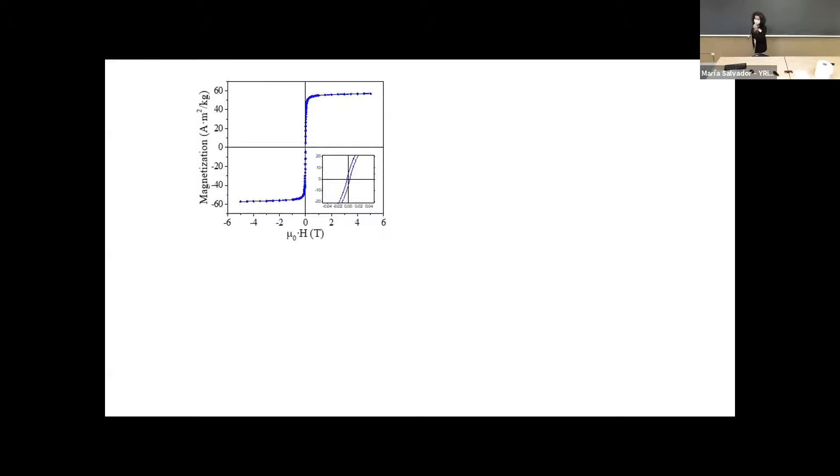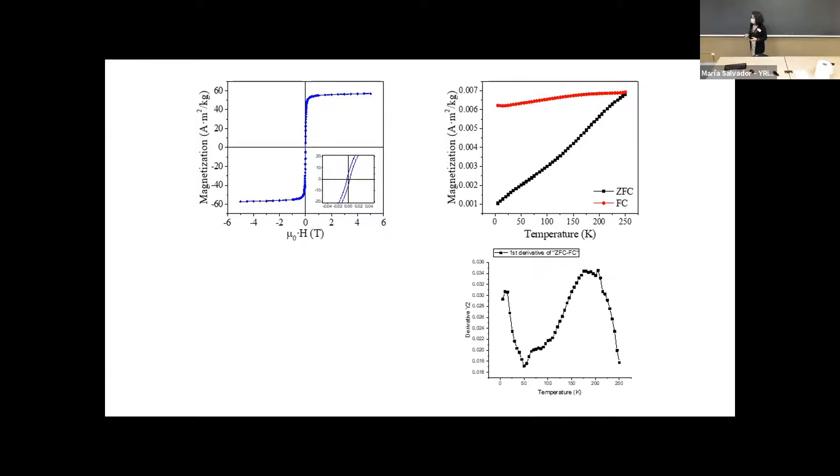So we have done the magnetic characterization of these nanoparticles, and here you have the room temperature magnetization curve in which you can see that almost there is no remanence and coercivity. So we suppose that the magnetic nanoparticles are within the superparamagnetic regime. However, when we look at the ZFC-FC curves, we see that all of them seem to be blocked. Also, if we do the distribution of the blocking temperatures, which is obtained by doing the derivative of the subtraction of the field cooling minus the zero field cooling curves, we can see that it has different bands here. So it seems that there are a lot of different critical sizes in our samples.